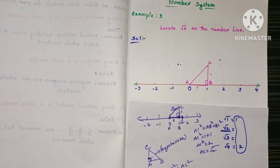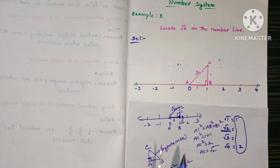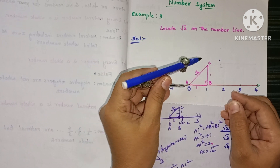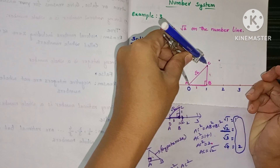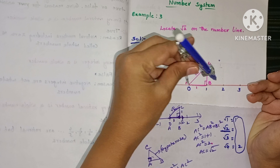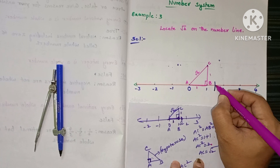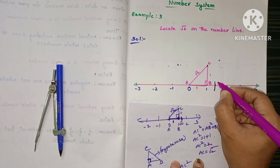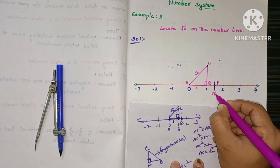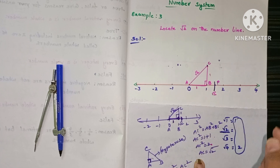By Pythagoras' theorem, 1 + 1 = 2, so AC² = 2 and AC = √2. The value of AC is √2. Now take the compass, measure the exact distance AC, and with A as center draw an arc on the number line. Between 1 and 2, the arc intersects at one particular point — let it be P. This point P is nothing but √2 on the number line, because we drew the arc with radius AC which equals √2.